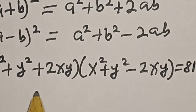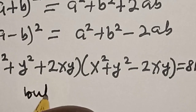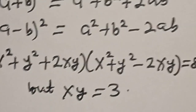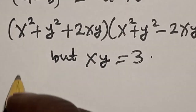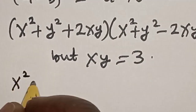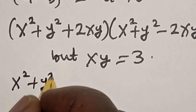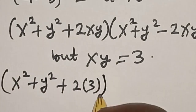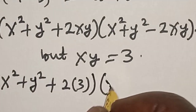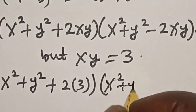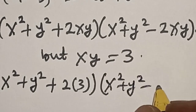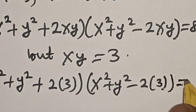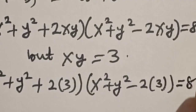We know that xy is equal to 3. Now we have x squared plus y squared plus 2 times 3, multiplied by x squared plus y squared minus 2 times 3, is equal to 81.